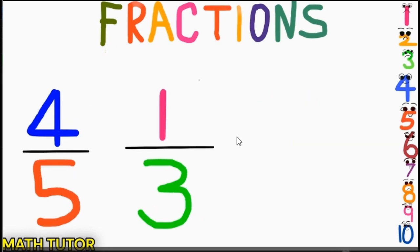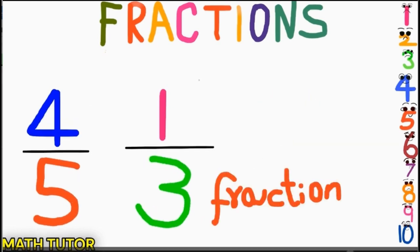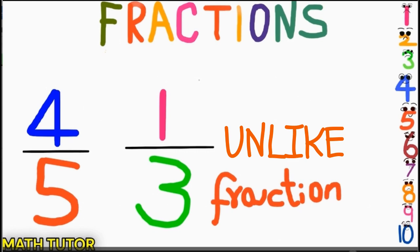Now let us see this one: 4/5 and 1/3. What do you think — is it a like fraction or an unlike fraction? Here the denominators 5 and 3 are different, meaning it is an unlike fraction.